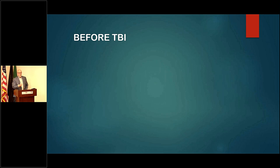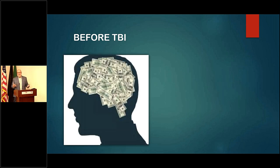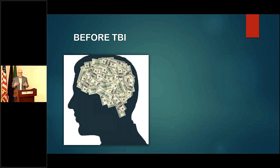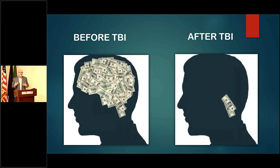In TBI we often talk about 'brain bucks' — the idea that thinking takes actual energy. Your brain uses about 20% of your daily calorie intake. Before a TBI, you have a certain amount of brain bucks to spend and you get used to spending them in your daily life. But after a traumatic brain injury, you'll have a lot less. You wake up with less, they get spent a lot quicker, which means you'll need to recover more often during your day. One of the ways to do that is to simply step off and relax.